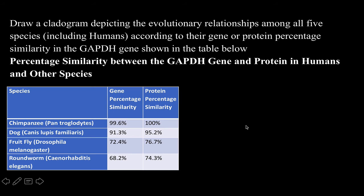Alright, this one is a little bit easier. So this is also looking at DNA, or in this case the protein - actually this one's looking at both. So this is looking at the percent of DNA that's similar to each other, and the percent of the protein amino acid sequences that are similar to each other, for specifically the GAPDH gene. So a gene that you find in all these organisms here. And once again, the more similar they are, the more closely related. So this is all compared to humans.